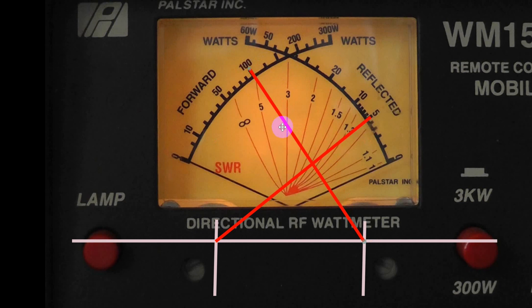Now what do you do if you're using voice? Because these needles are dancing. They will dance back and forth, both of them reflected and the forward, but they will tend to always converge on one of these lines. They'll cross each other on one of these lines and you've got to kind of look for which line they're crossing on and that will give you the SWR.